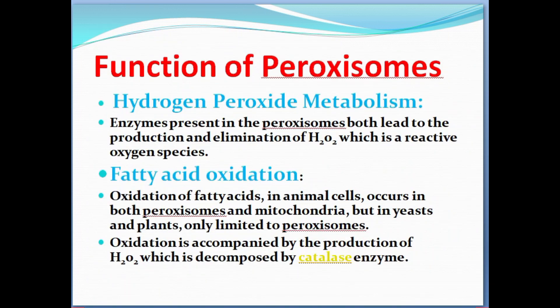Functions of peroxisomes. First function: Hydrogen peroxide metabolism. Hydrogen peroxide forms in peroxisomes. Enzymes present in peroxisomes both lead to the production and elimination of H₂O₂. So the metabolism of H₂O₂ — its production and decomposition — is carried out by peroxisomes.